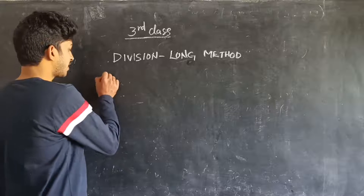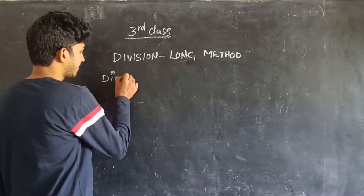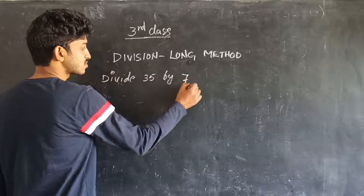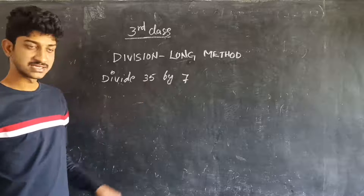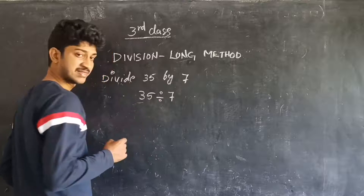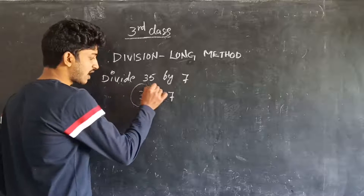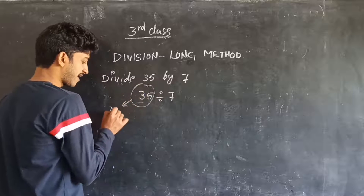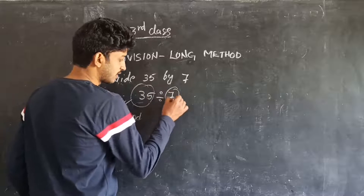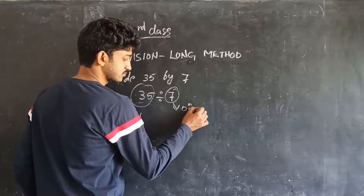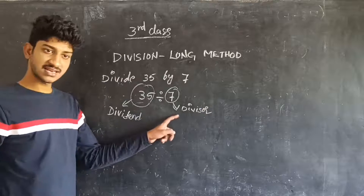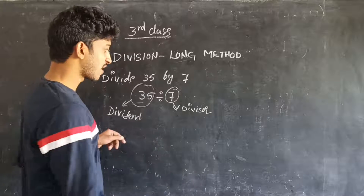Here I am taking an example: divide 35 by 7. So we have to divide 35 by 7. That means 35 divided by 7. This number is called the dividend. And this term is called the divisor — the number which divides is called the divisor.